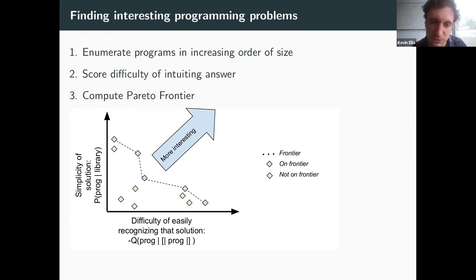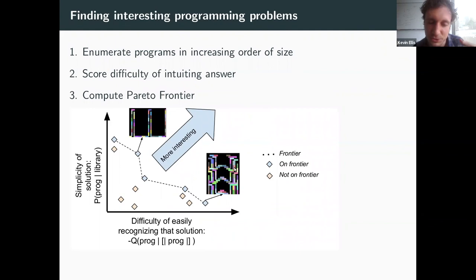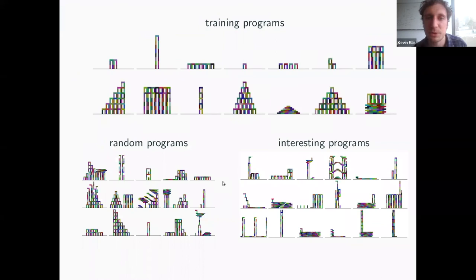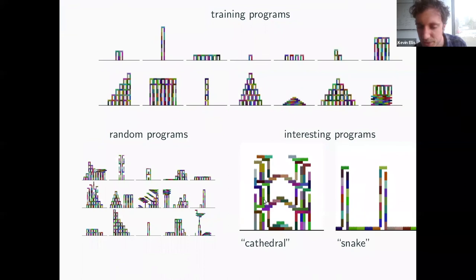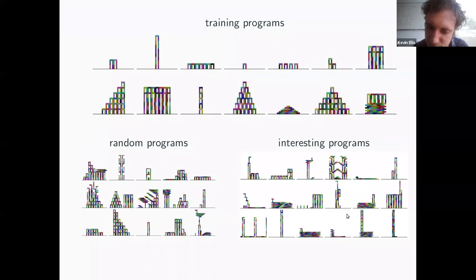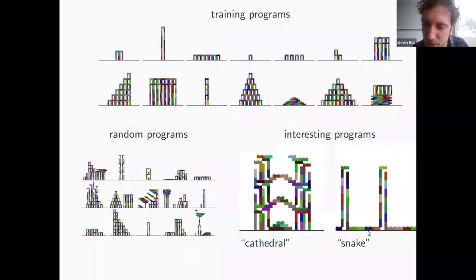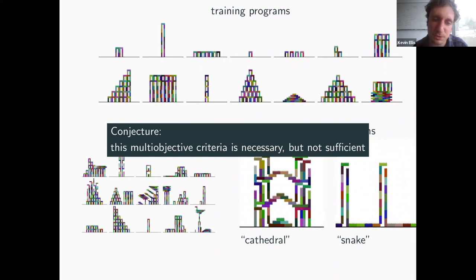You can think of it as a Pareto frontier, optimizing two objectives: how simple is the program, and how hard is it to recognize the solution? Different programs live at different points on this frontier. Preliminary results suggest something valuable: things on the Pareto frontier look like interesting designs. In the towers domain, one of the most interesting things picked out is a cathedral-like architecture — nothing like it appeared in the training data or random dreams. Some items on the frontier look boring, but it's definitely giving a valuable signal. This multi-objective criterion may be necessary but not sufficient; this is very much ongoing work.